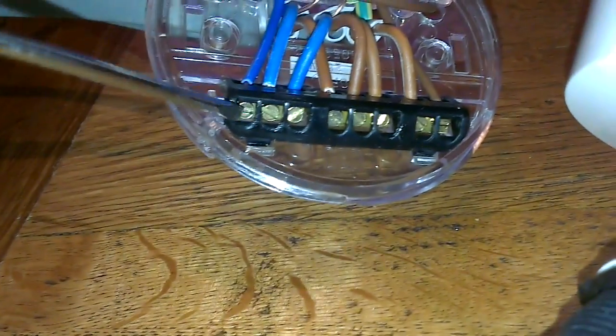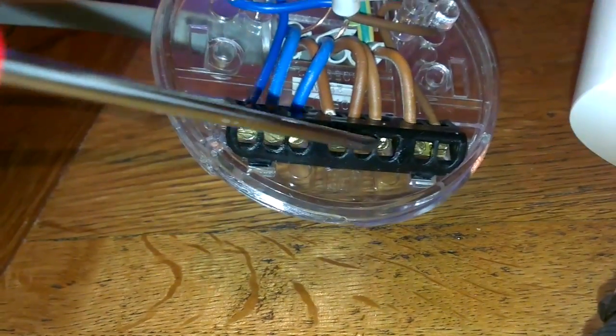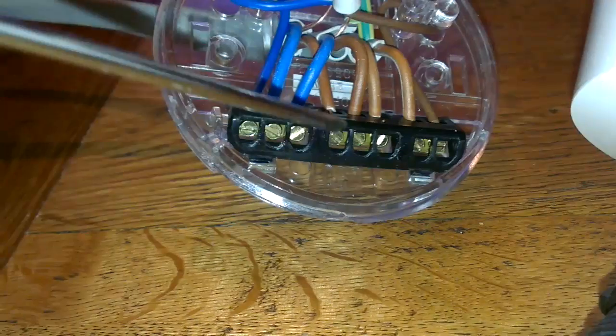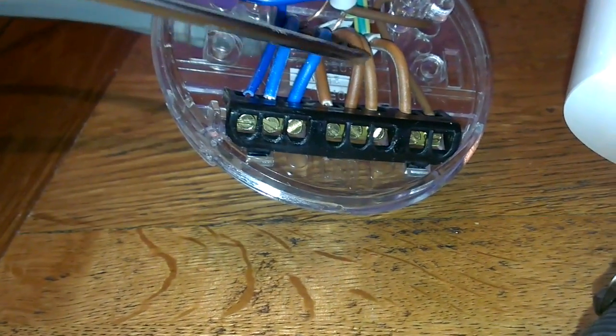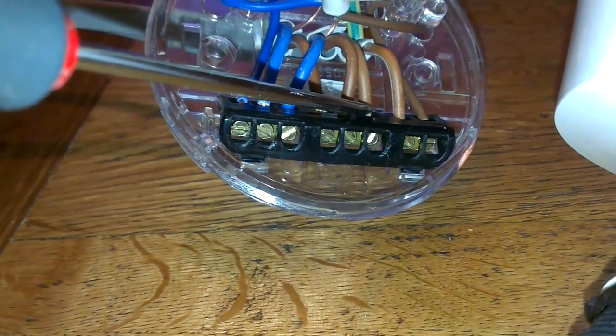You've got three neutral connections, three live connections—there are permanent live. That's your feed in, your feed out, feed in there, feed out, and then your feed to your light switch.